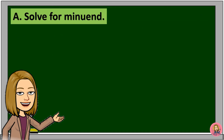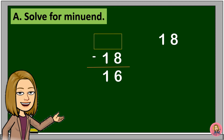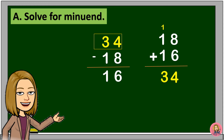Now, let's try to solve for the minuend. To solve for the minuend, we will add 18 and 16. 8 plus 6 is equal to 14. Carry 1, and we will add 1 plus 1 plus 1 is equal to 3. So, the minuend is 34. If we subtract 18 from 34, the difference is 16.